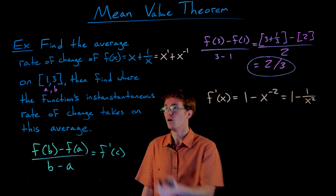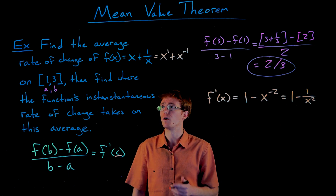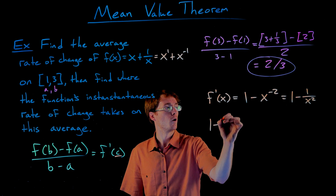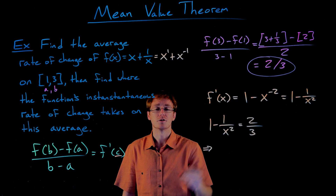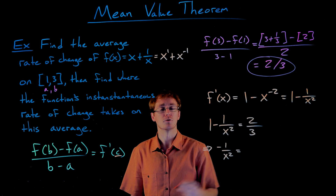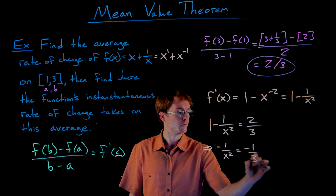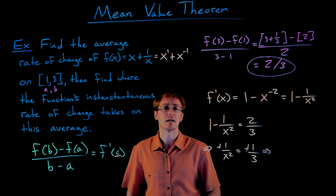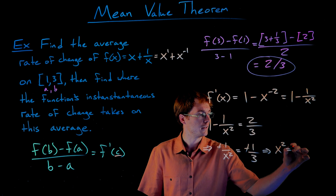We're searching for the special c value within our interval from 1 to 3 where the derivative equals the average rate of change. So we set 1 − 1/x² = 2/3. Subtracting 1 from each side gives us −1/x² = 2/3 − 1. Since 1 = 3/3, we get 2/3 − 3/3 = −1/3. Multiplying both sides by −1 and reciprocating both sides — or using cross multiplication — gives us x² = 3.